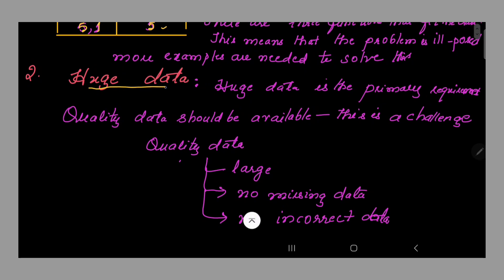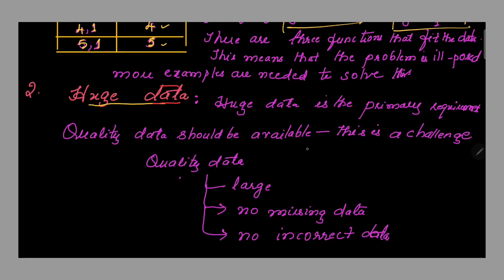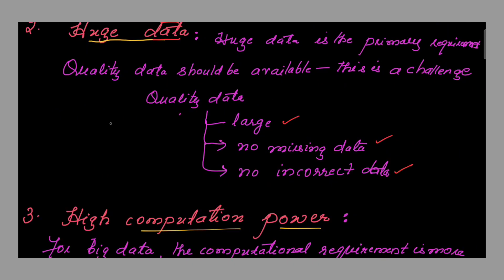The next challenge is huge data. Huge data is the primary requirement, and quality data should be available. Quality data should be large, with no missing data and no incorrect data. When collecting large datasets, there are often missing values in cells that must be resolved. Incorrect data is also an issue — for example, in an employee age column with values like 25, 35, 38, 40, a value like 105 is not relevant and must be corrected.